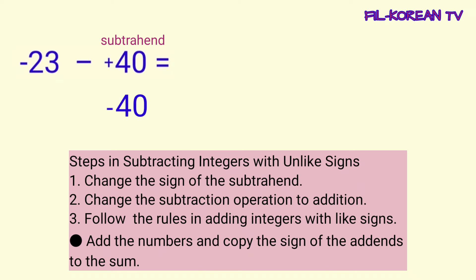Pagkatapos, itong subtraction sign, papalitan natin ng addition sign — magiging plus ito. At itong minuend na negative 23, kukupyahin lamang natin dito. Ito na yung isosolve natin: negative 23 plus negative 40.